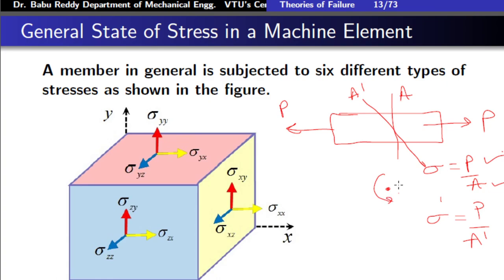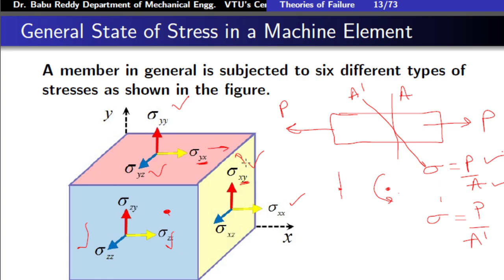Fortunately, it is not required. You can show later that at a point, if you know just six stress components acting on six planes, you can find out the stress on any other plane you desire. To correctly specify stress at a point, you need to know at least six components: sigma xx, sigma yy, sigma zz, tau xy, tau yz, and tau zx. By equilibrium, tau yx equals tau xy, so we need totally six components to completely specify the state of stress at a point. Knowing these six, you can find stress on any inclined plane.